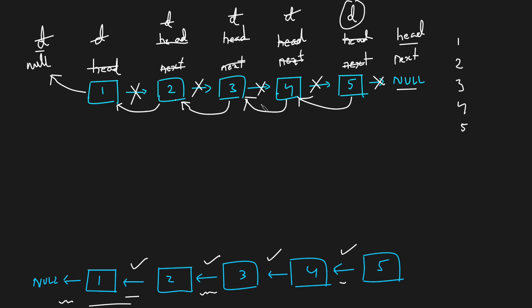The time complexity is O(n) because we traverse exactly n nodes to perform n objectives — first, second, third, fourth, and fifth. The space complexity is O(1) because we reversed the given linked list in-place without using any external linked list.